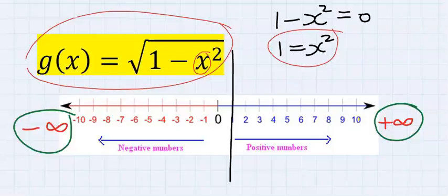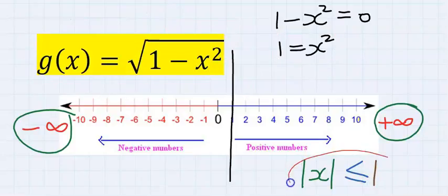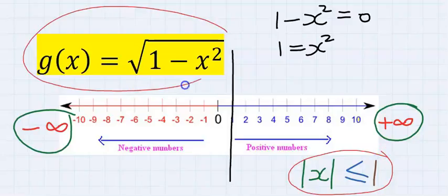It doesn't matter if it is negative or positive; hence, the absolute value of x must be less than or equal to one if this function must continue. This is the answer to this problem, and the answer is C.